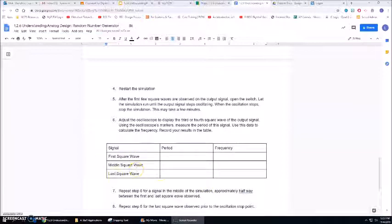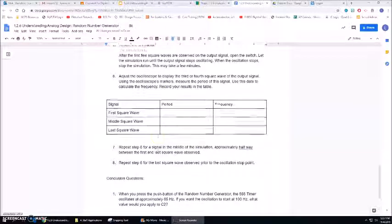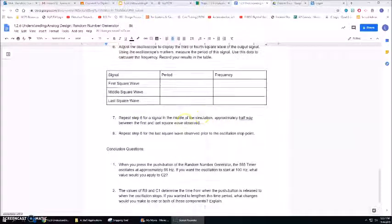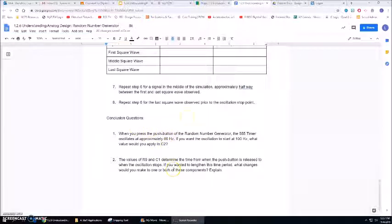So you're looking for first square wave, middle square wave, and last square wave. You're going to repeat step six for a signal in the middle of the simulation, obviously documenting that in the table and you have two conclusion questions right here. If you have any questions let me know.